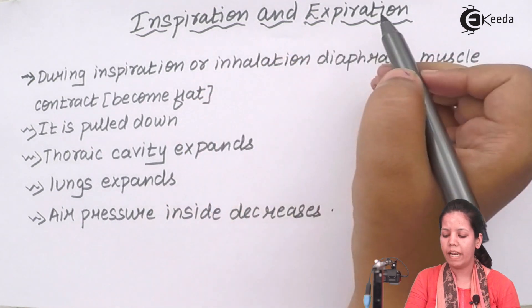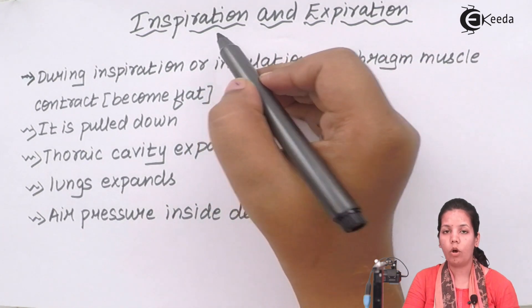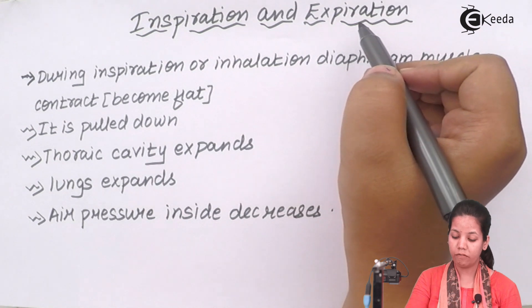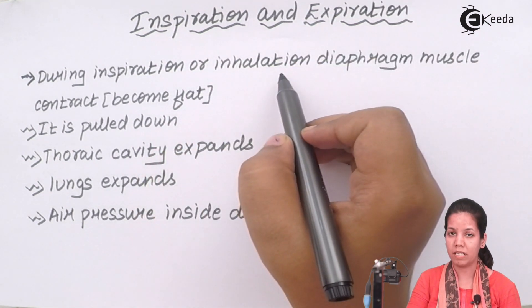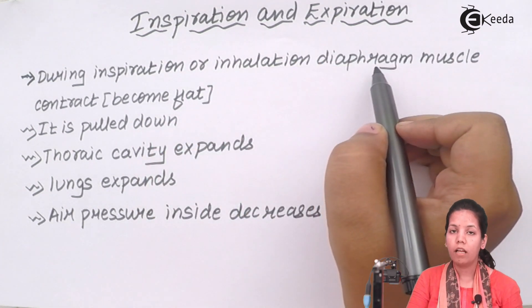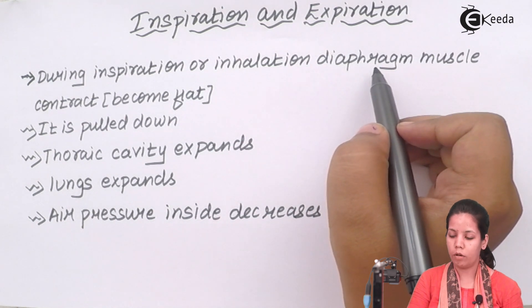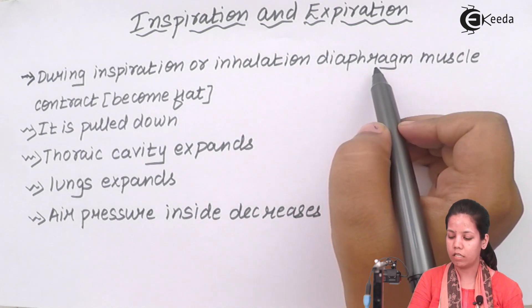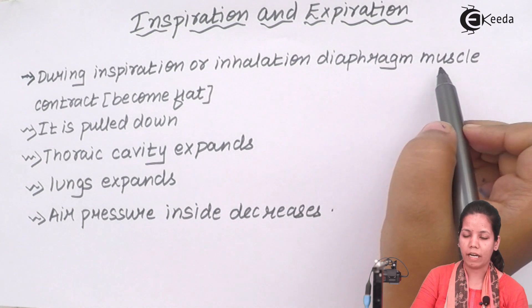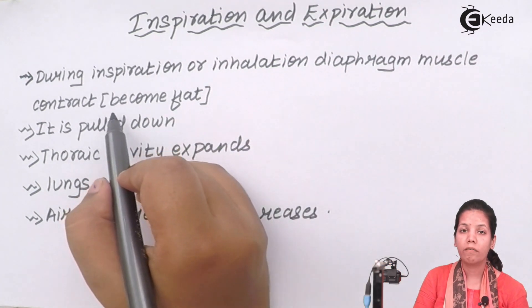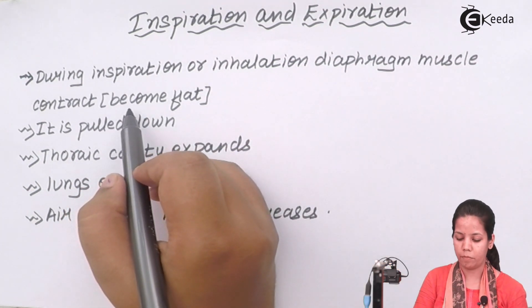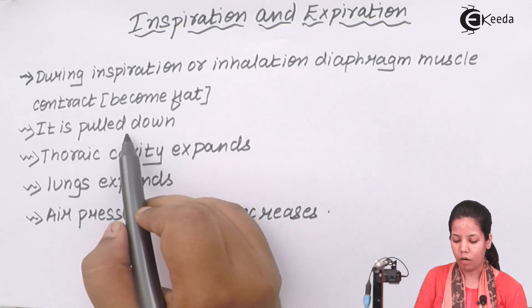Inspiration or expiration or you simply say it inhalation or exhalation. Now during the process of inspiration or inhalation what happens is that your diaphragm or your arc shaped part just beneath your lungs muscle become contract. And when I say contract it means flat in the terms of respiration due to which it is pulled down.